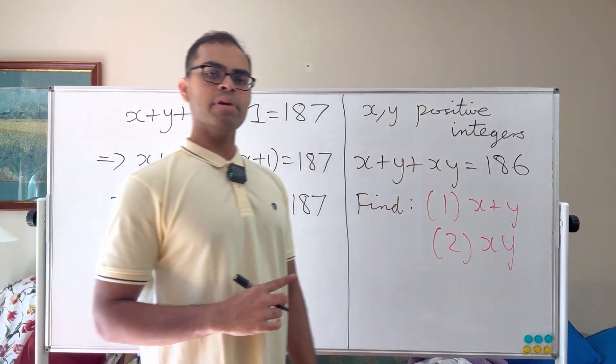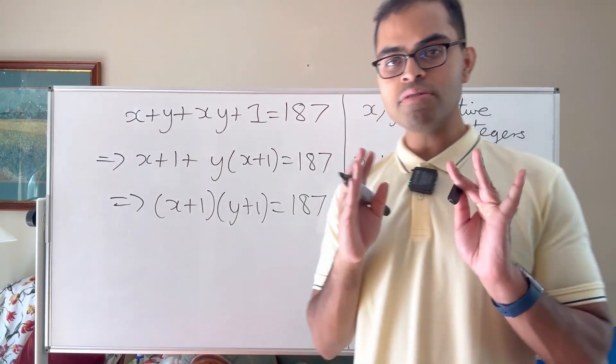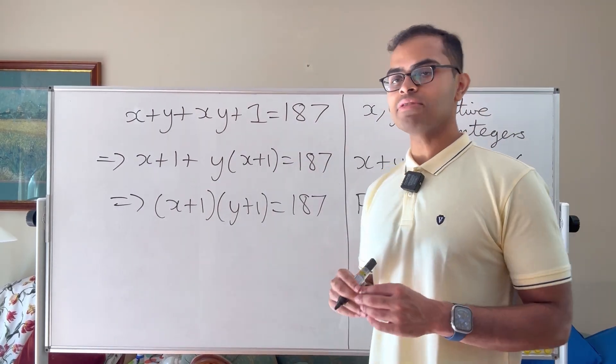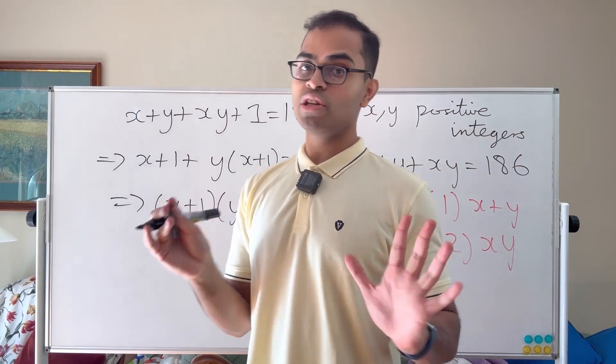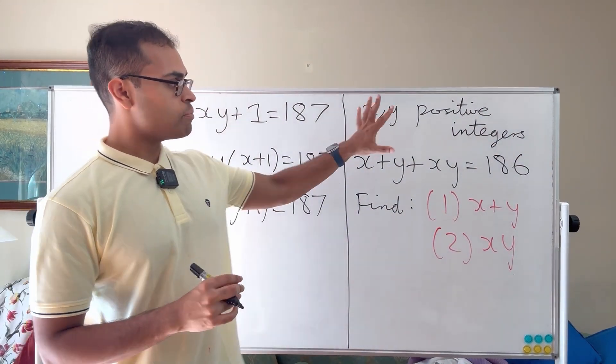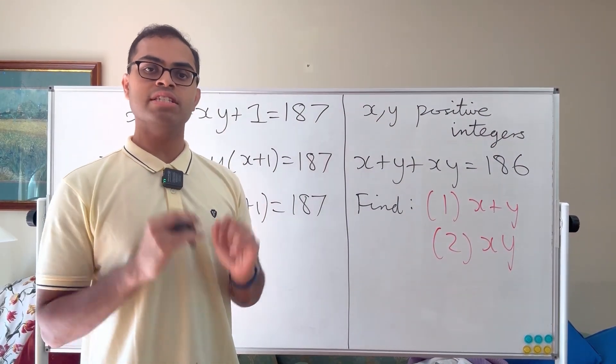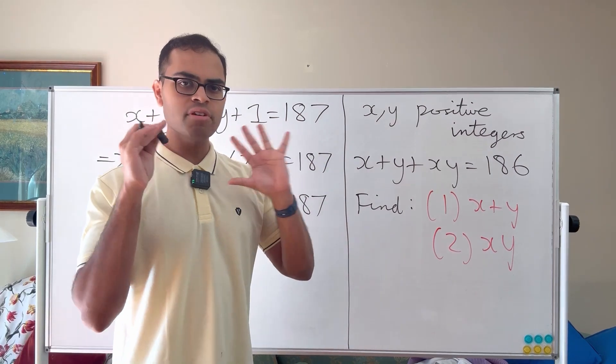Now why have we done this? Well, basically you need to think about, since these are positive integers, that's going to be crucial. The problem would not have a solution otherwise. But because they're positive integers, one equation suffices and we need to think about factorizations.